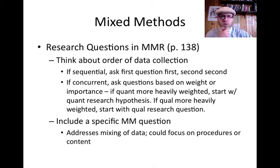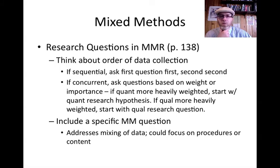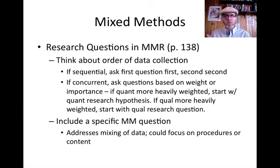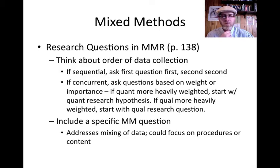If your order is concurrent, then you ask questions based on the weight of importance. If the quantitative is heavily weighted, you start with the quantitative research hypothesis and then move into the qualitative. If the qualitative is more heavily weighted, then you start with that. Another option is to ask a specific mixed methods question — an overarching way of framing the question that incorporates both the quantitative and qualitative — and then break it down into smaller, more specific questions, addressing in particular the mixing of the data and how you are going to analyze and bring it all together.